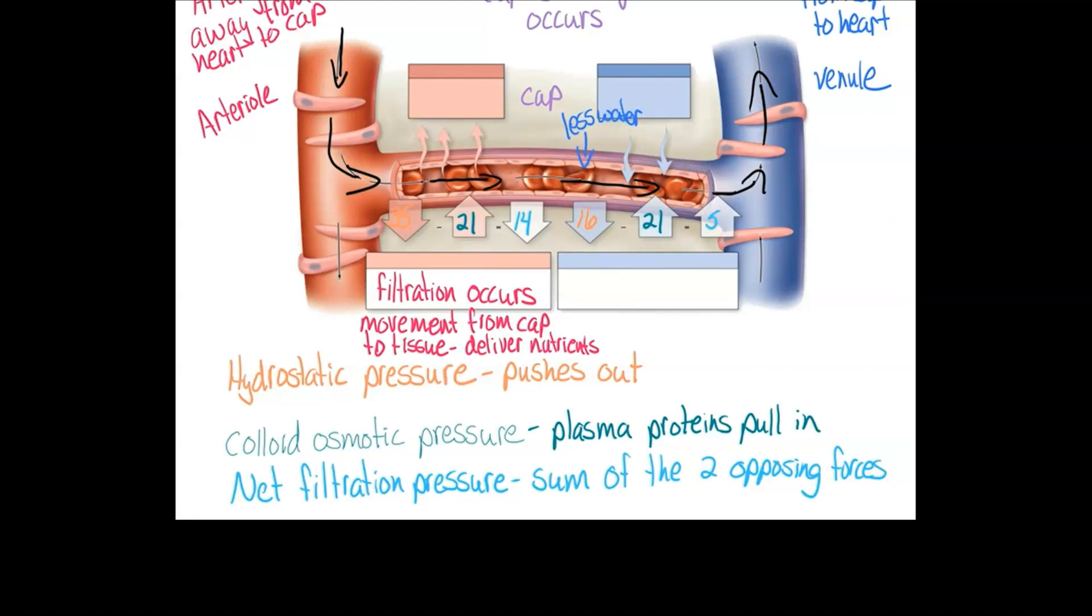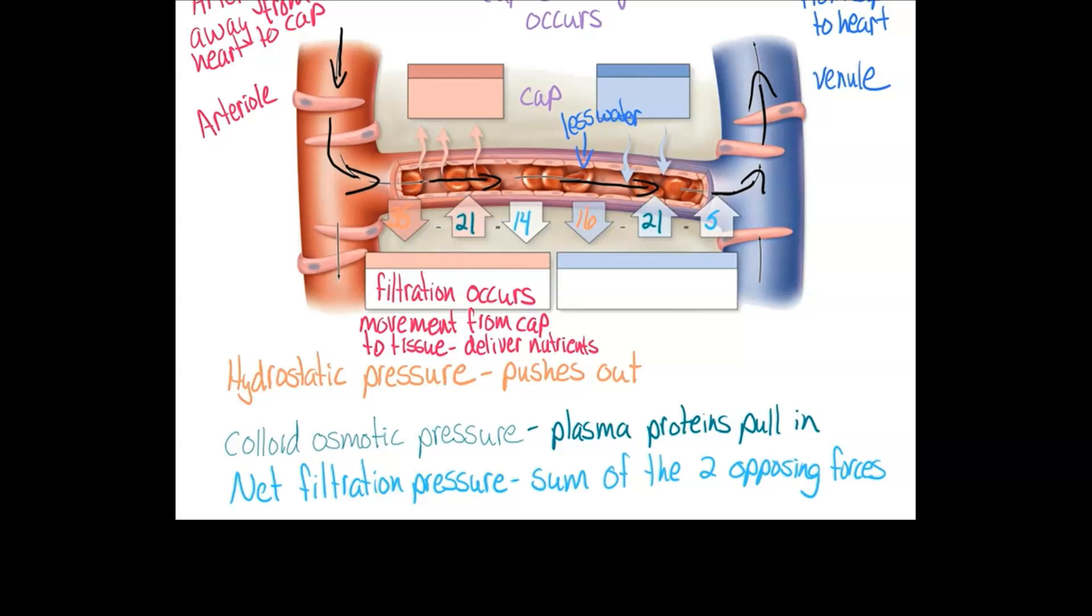So now our net filtration pressure is inward. And it wins, colloid osmotic wins by 5. So now we have a net filtration pressure of 5 going in. At the venous end of the capillary, reabsorption occurs. This means we have a movement from the tissue into the capillary. This is how you pick up the waste from your cells.